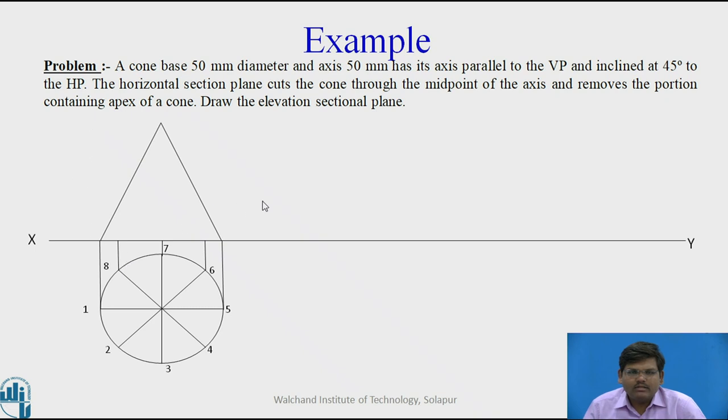Now let us join the generators. So you can see the generator joining with the apex and this is the axis of the cone. Now naming in the front view. So we have named as at the base 1 dash, 2 dash, 8 dash, 3 dash, 7 dash, 4 dash, 6 dash and 5 dash.